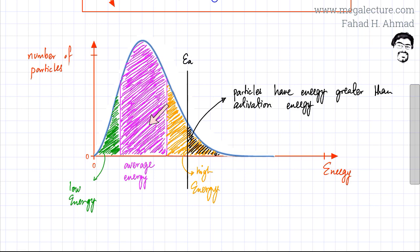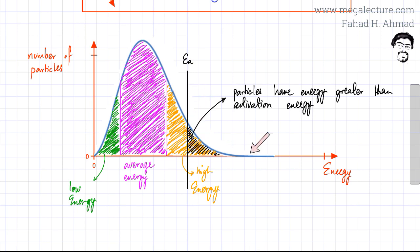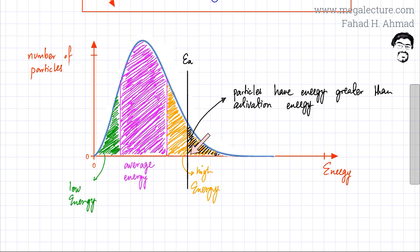To summarize the Boltzmann distribution: the horizontal axis is the energy axis and the height represents the number of particles. Most particles have average energy or close to average energy — the higher the graph, the more particles at that energy. A few particles have high energy, and as you move toward extremely high energy, the number of particles becomes fewer and fewer. Some particles have considerably low energy, and those are also fewer in number. Any particle with energy greater than the activation energy is able to successfully collide and take part in the reaction.